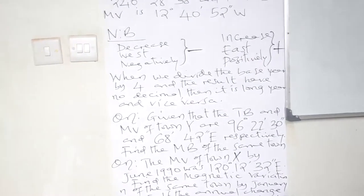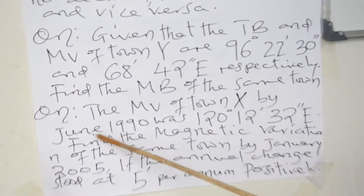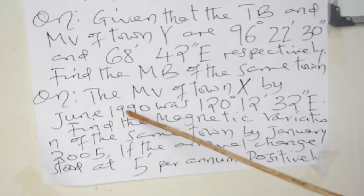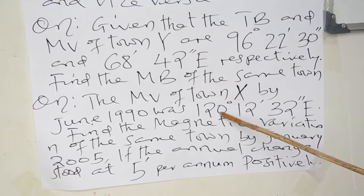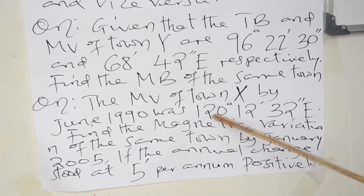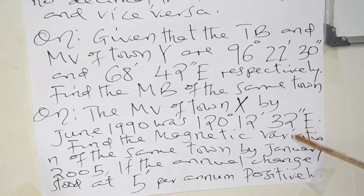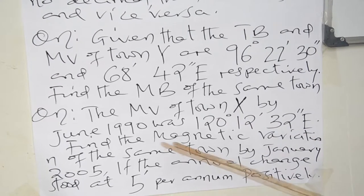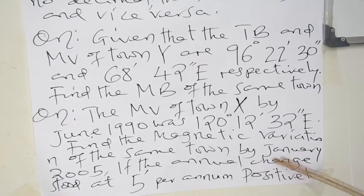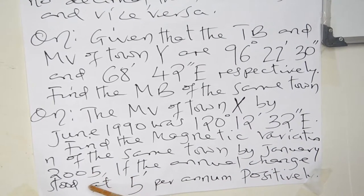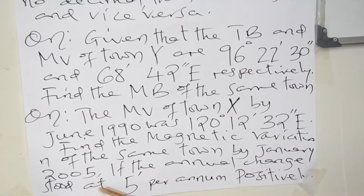Another question: the magnetic bearing by June 1990 was 120 degrees, 12 minutes, and 32 seconds in Eastern parts. Find the magnetic bearing by January 2005, if the annual change is 5 minutes per annum, possibly.